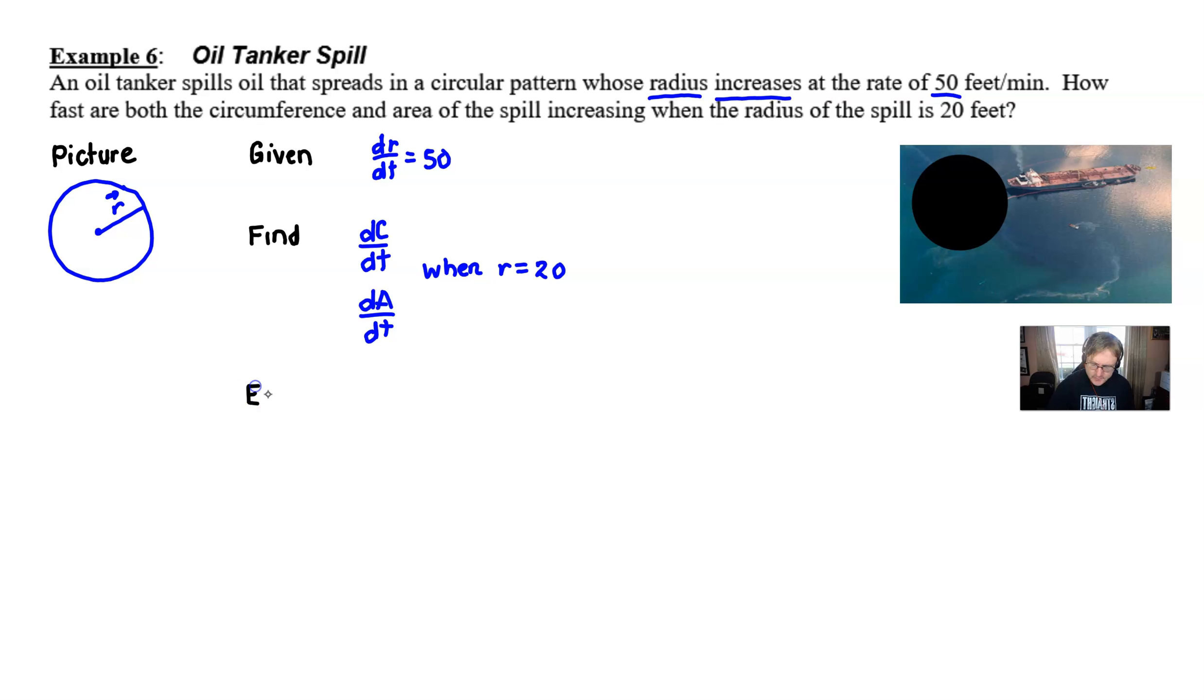And then our equations. Well it turns out there's actually going to be two equations. If you haven't deduced this by now, this is actually a dirty trick. It's like two problems in one, right? So your circumference is 2πr and your area is going to be πr². So we're ready to go ahead and start taking our derivatives and figure out what we've got.